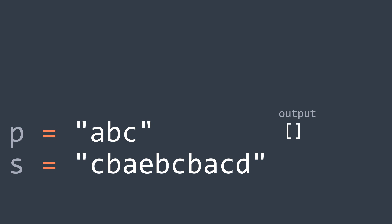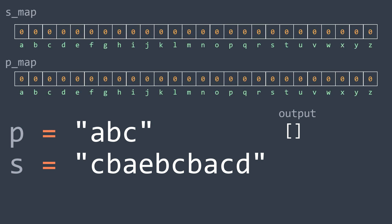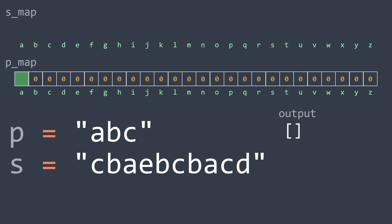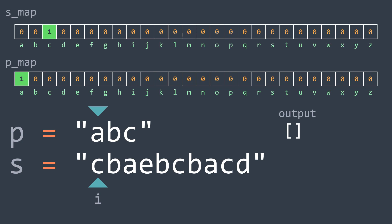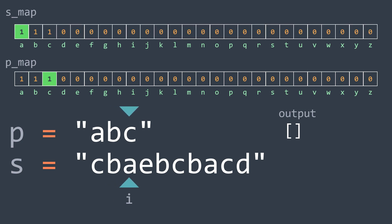Let's see how this works with our example. First step: we create our arrays of 26 elements, all starting at 0. Second step: we fill pmap with occurrences in p and smap with occurrences in the first window. At the first index we increment a in pmap and c in smap; at the second index we increment b in pmap and b in smap; at the third index we increment c in pmap and a in smap. Now smap and pmap are equal, so we have an anagram at index 0 — we put 0 into our output.